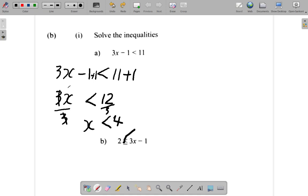Let's look at this one, part B. Let's do it over here. Let's separate them with a line. Now, what we have is 2 is less than or equal to 3x minus 1.